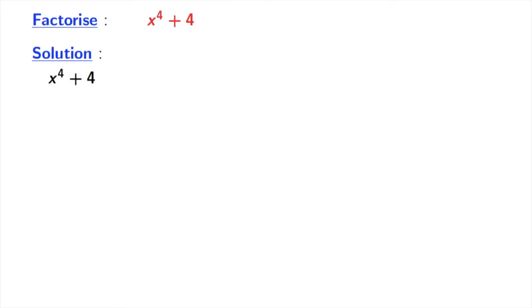This is our given expression that is x power 4 plus 4. We will write it as x power 4 plus 4 plus 4x square minus 4x square. Here we have added 4x square and subtracted 4x square, so we have done nothing extra.